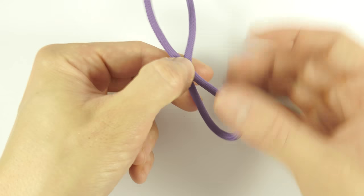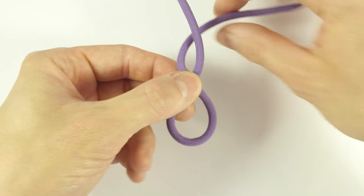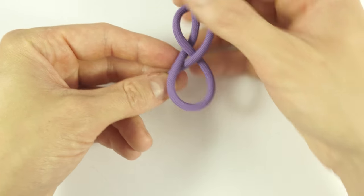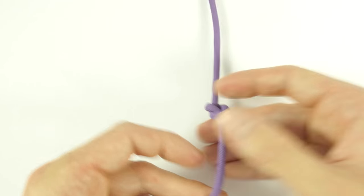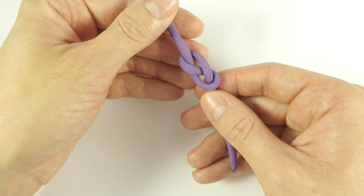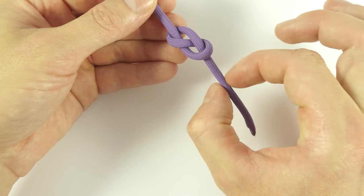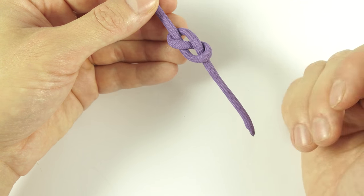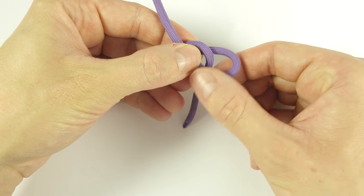So again, an 8 shape, like this, then tuck your working end into the bottom loop. Now work in some slack into the working end so that we can create our loop. So we pull in our standing end a little bit.